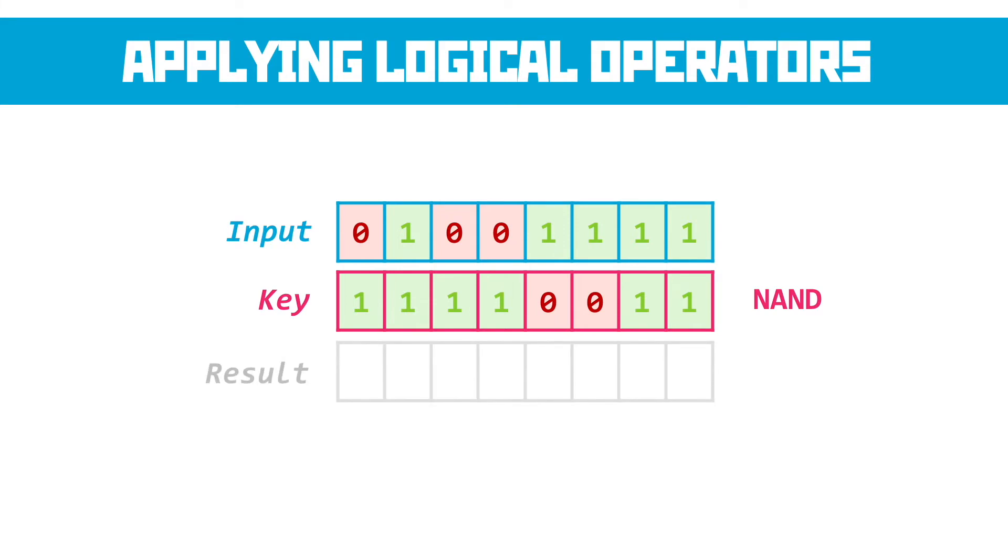And what you'd be expected to do is go through one at a time and identify what the operation of those two values and the NAND would result. So the NAND of 0 and 1 would give us 1, onto the next place. The NAND of 1 and 1 would give us 0. The NAND of 0 and 1 gives us 1, 1 again, 1 again, 1 again, and then two zeros at the end. So all we're doing is applying the logical operations in column form. And the result we get is our ciphertext or the result.